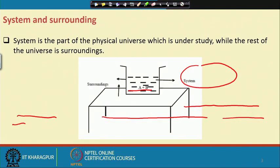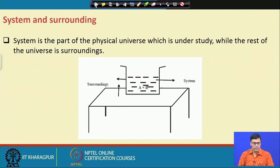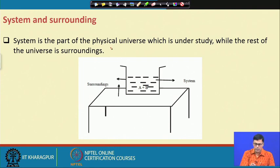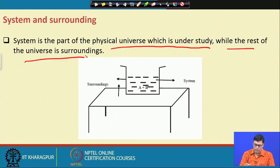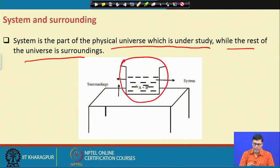Let us find out what we mean by system and surroundings. The system is the part of the physical universe we are studying, while the rest of the universe is the surroundings. For example, suppose we have a beaker with water inside — this beaker is considered the system lying on a table, and everything other than the beaker is the surroundings.